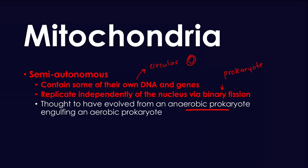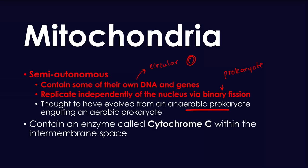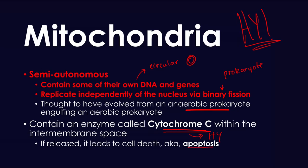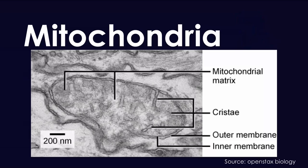This actually comes back in medical school. The mitochondria also contains an enzyme called cytochrome C — very high yield, definitely something you should be well versed with. The cytochrome C molecule plays a very important role in apoptosis. Essentially, if the mitochondria gets damaged and the outer membrane gets damaged, cytochrome C will be released from the intermembrane space and it's going to induce apoptosis — programmed cell death.